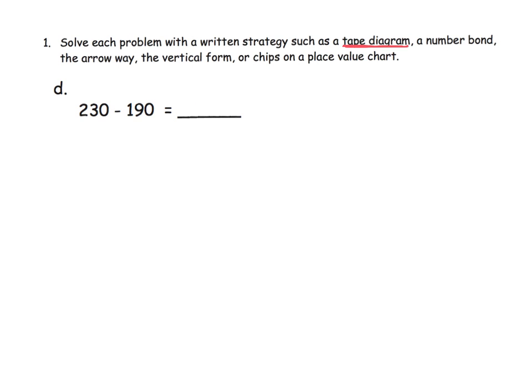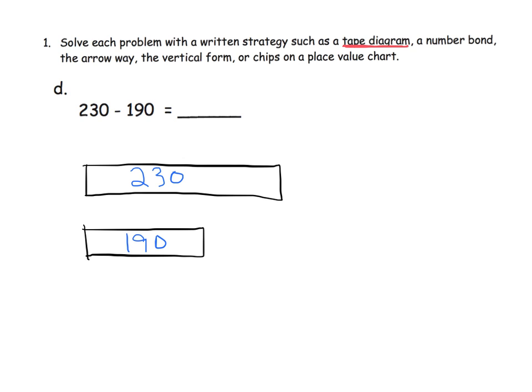This is problem D. Same idea. We have a bunch of different methods that we can choose from. I'm going to use the tape diagram on this one. And we're going to remember that for subtraction, we can model our two numbers. And I can model this as 230, and I can model this as 190, and that our answer to this subtraction problem is this gap right here.